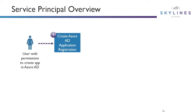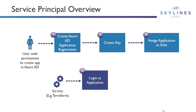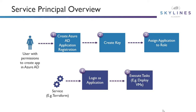An overview of service principles really looks like this. A user with permissions to create an app in Azure AD goes into Azure AD and creates that application registration. They create a key, and then they assign an application to the role. Then a service, for example Terraform, can simply log in as the application and execute tasks, deploy VMs, etc. So the principle has to be created first by a user with permissions, then we'll plug it into Terraform and use it to log in as the application to execute our various tasks.